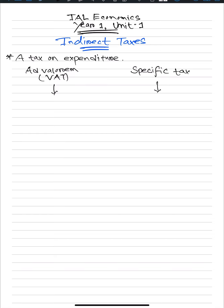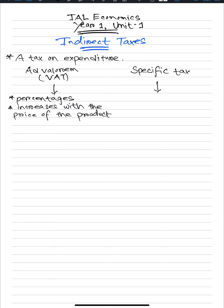In real life we see that VAT is 3%, VAT is 5%. The easiest way to understand if it is an ad valorem tax or a specific tax is that VAT is always in percentages, and it usually increases with the price of the product. Specific tax on the other hand is a lump sum tax and does not really increase or decrease with the value of the product — it is just a unit tax. For example, the specific tax can be 5 dirhams per unit.